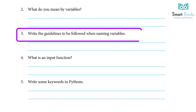3. Write the guidelines to be followed when naming variables. Answer: Guidelines for naming variables: 1. An underscore or an alphabet can begin a variable name. 2. White spaces are not to be used to create variable names. 3. The names of variables can be made up of letters, numbers, and underscores. 4. A variable name needs to make sense.